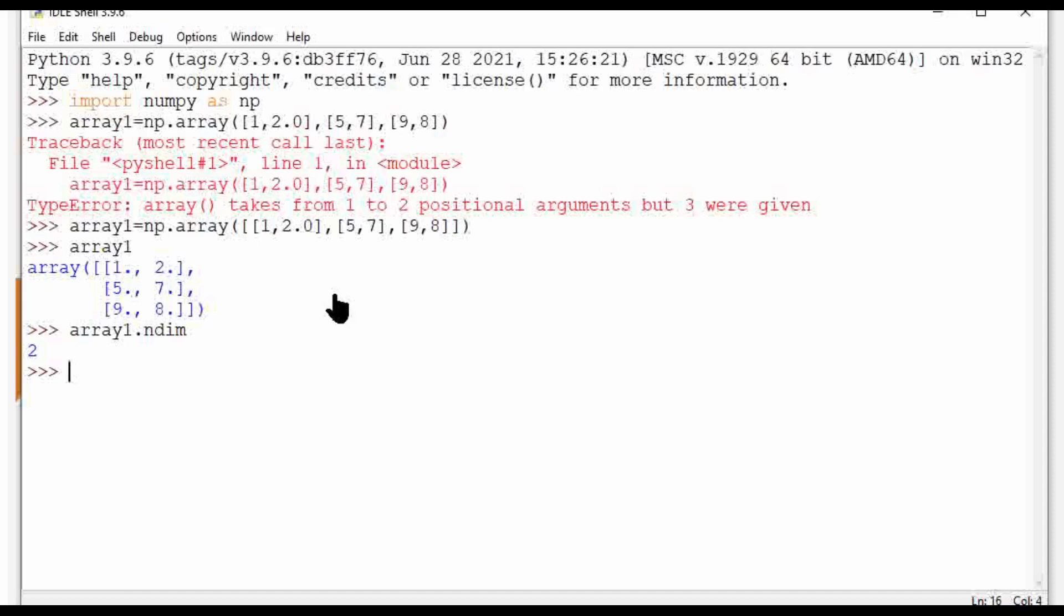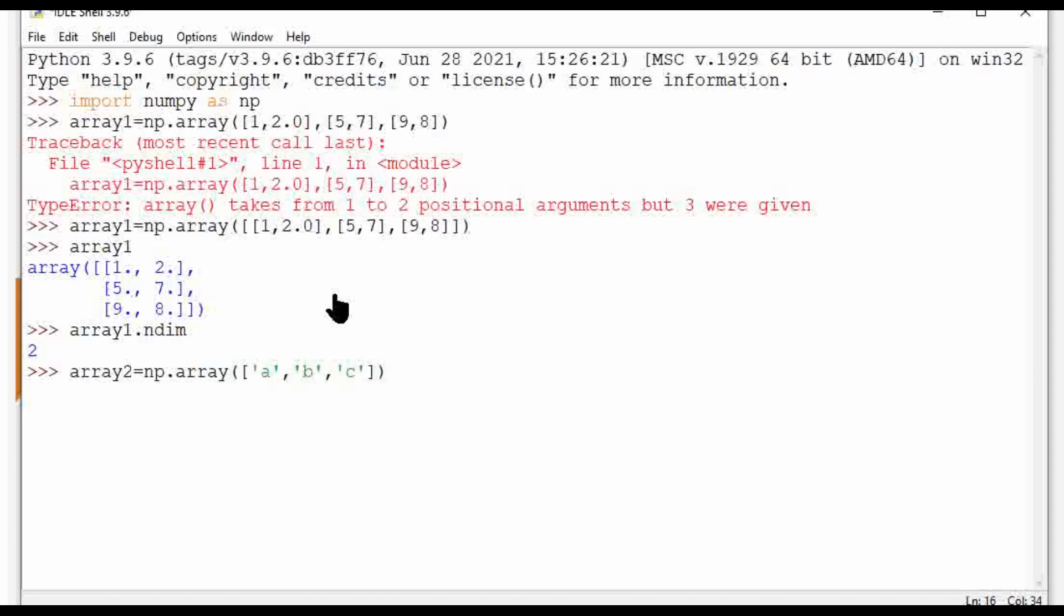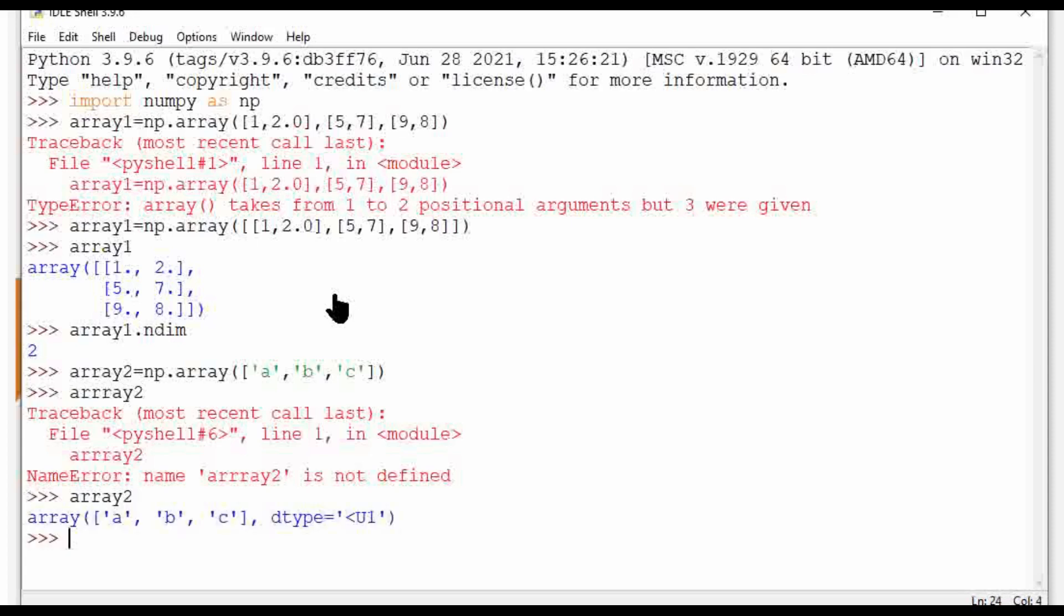Let's create a one-dimensional array. Array2 equals np.array with values ['a', 'b', 'c']. It is a one-dimensional array. Print array2. There was a mistake in spelling of array2, so I am typing again. Array2. See, one-dimensional array is printed: a, b, c, dtype U1.